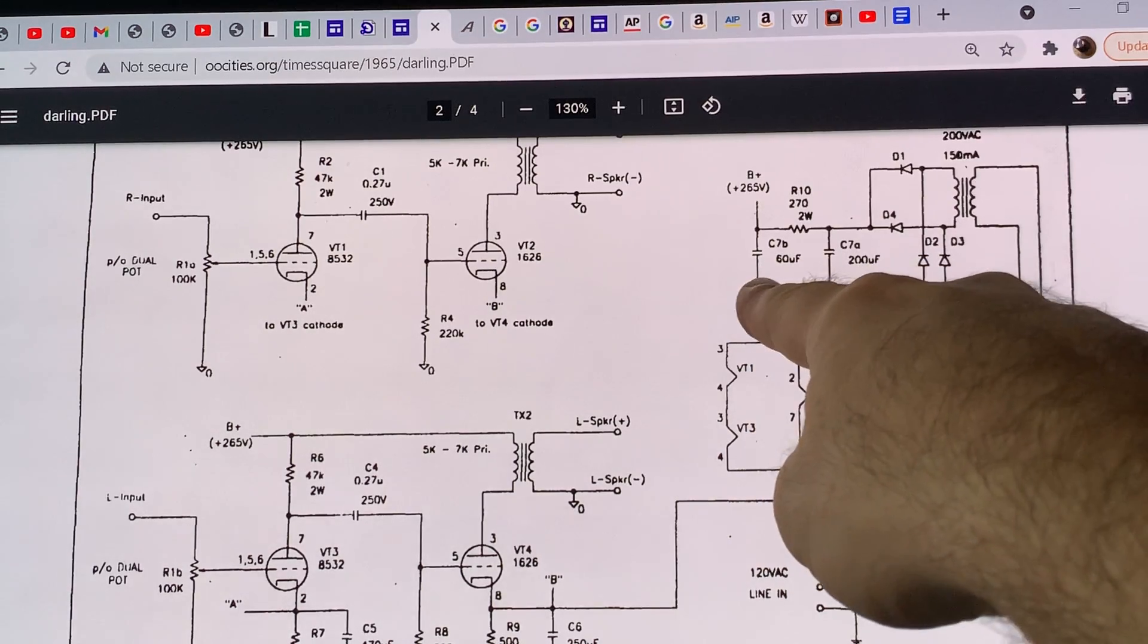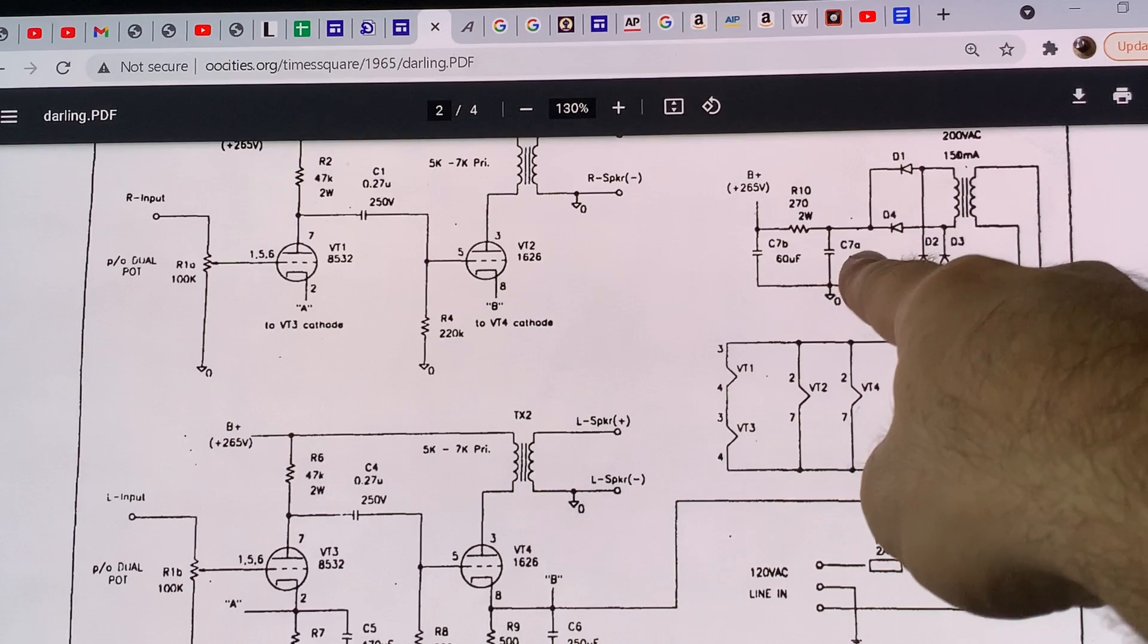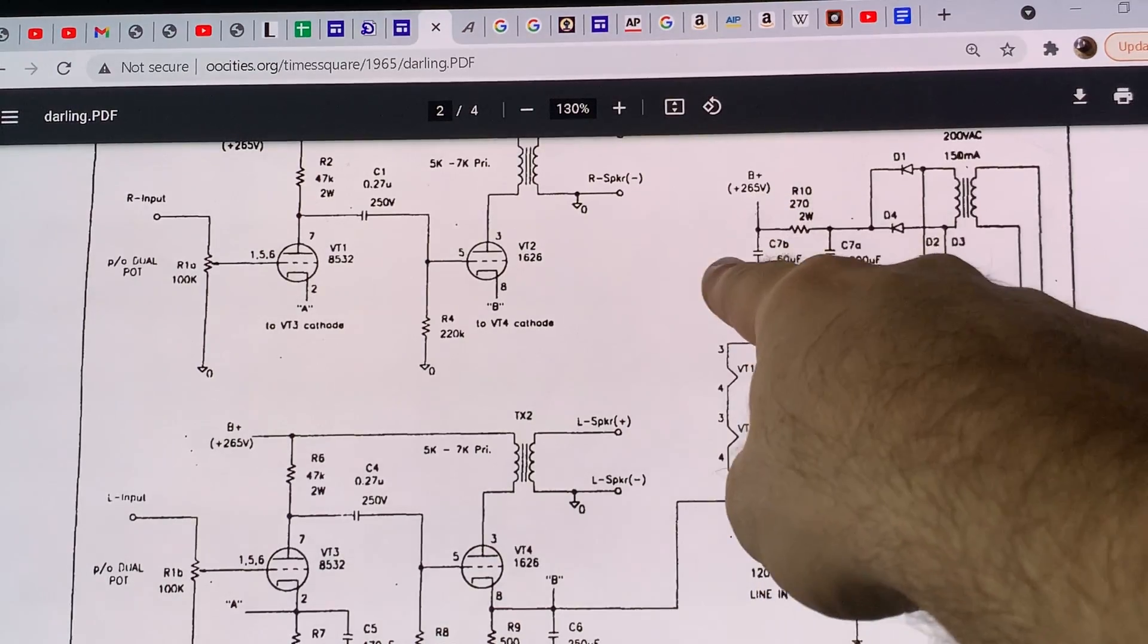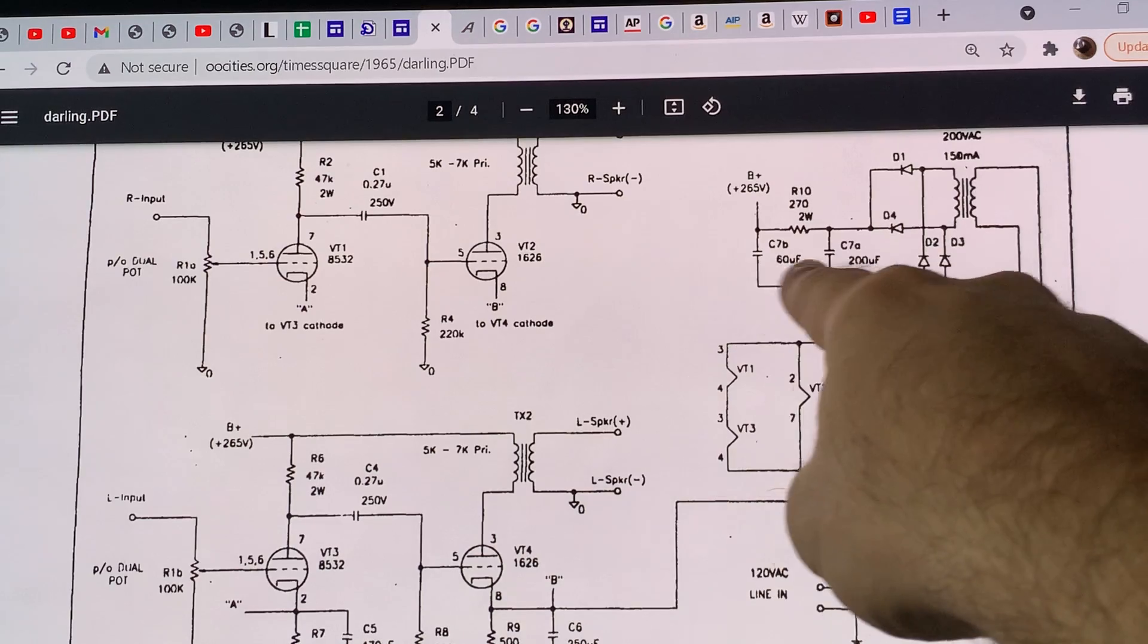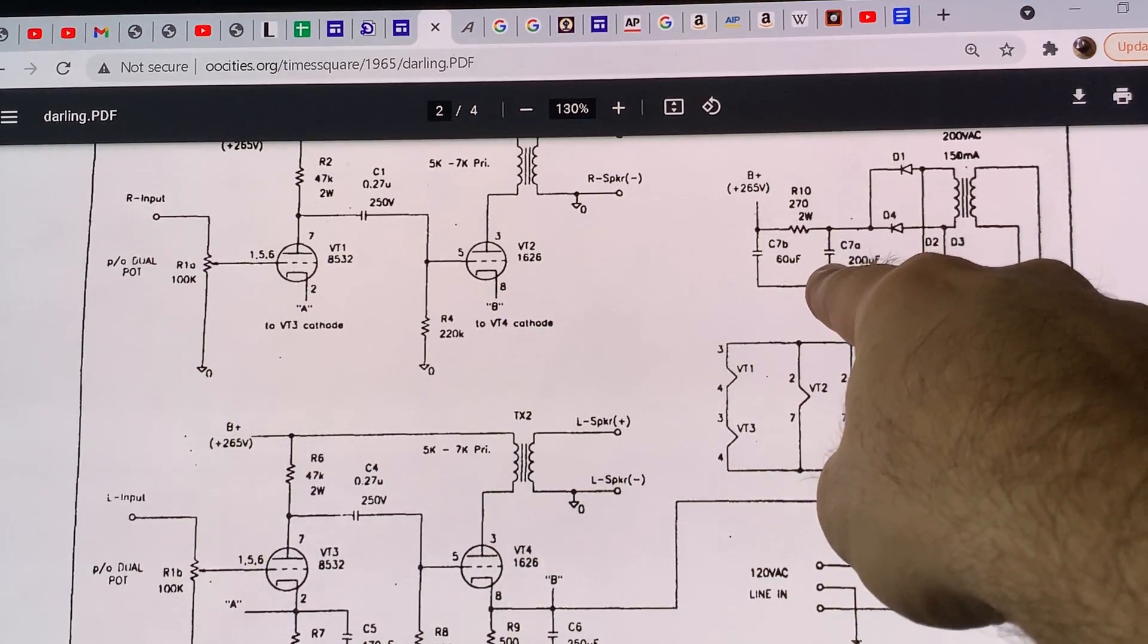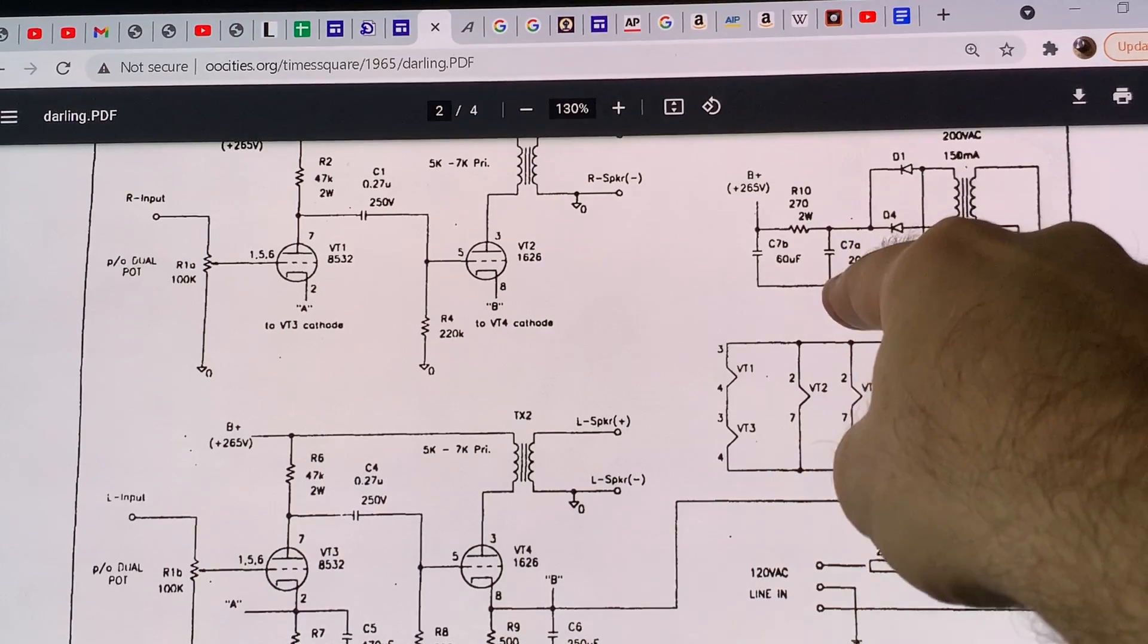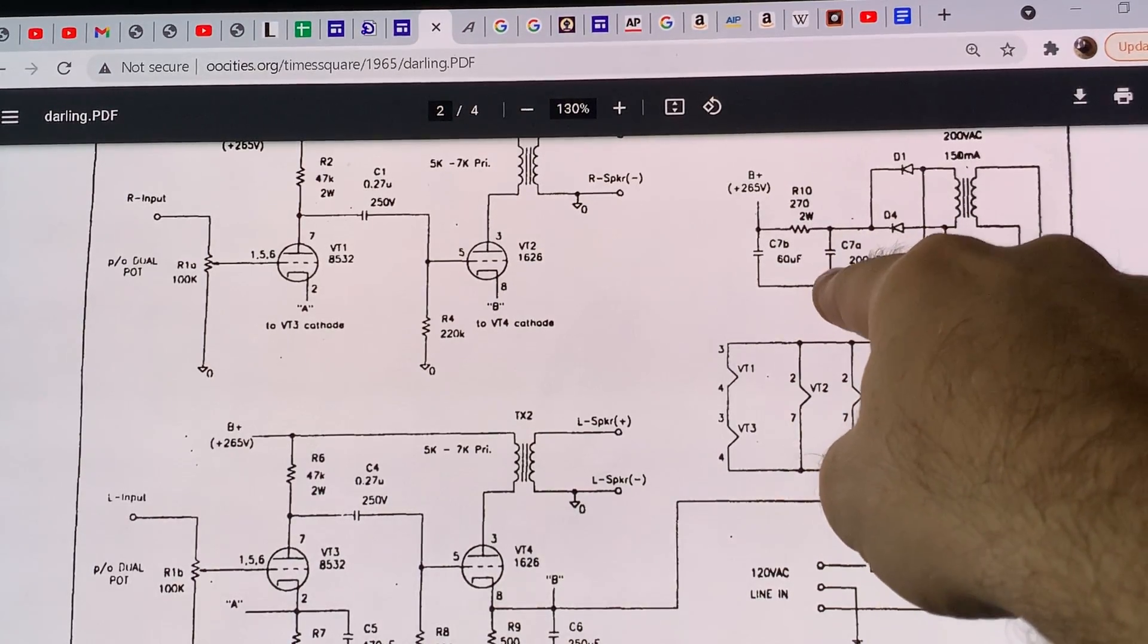Here he has a very strange capacitance value, 200 microfarad for first capacitor, 60 microfarad for second capacitor in the pi filter. What you want is to have both at the same value, or have the second capacitor bigger than the first. He had to build it this way,